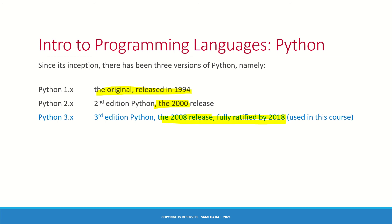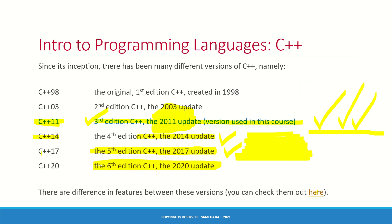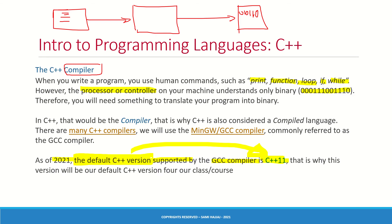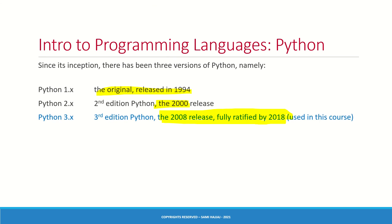It took 10 years for Python 3 to be fully ratified — this illustrates why new language definitions are not automatically adopted. There are many reasons: compilers and supporting technologies need to catch up, third-party libraries need updating, the community needs time to become proficient, and training material must be developed. A programming language being released does not mean it is immediately adopted by the industry.